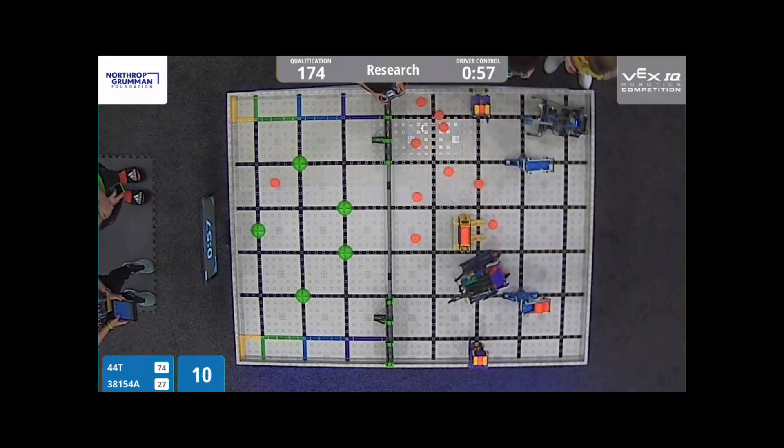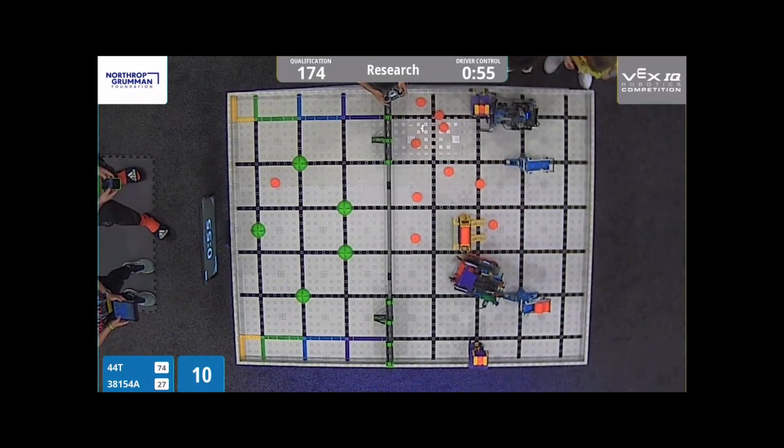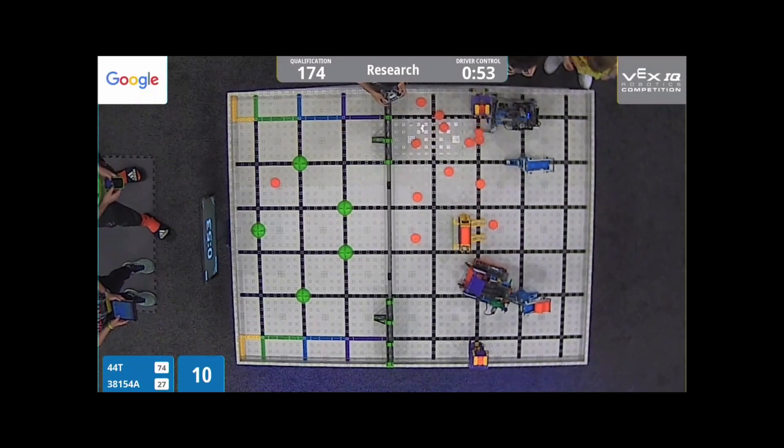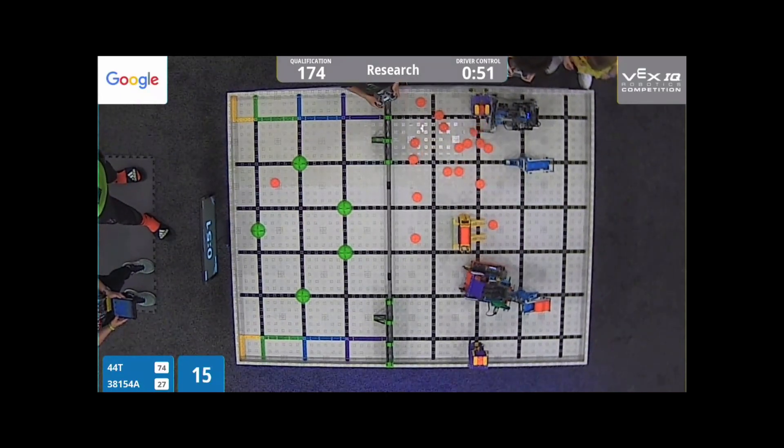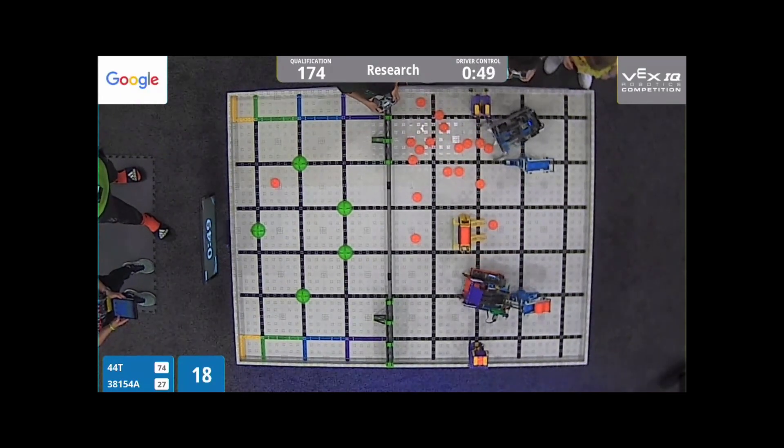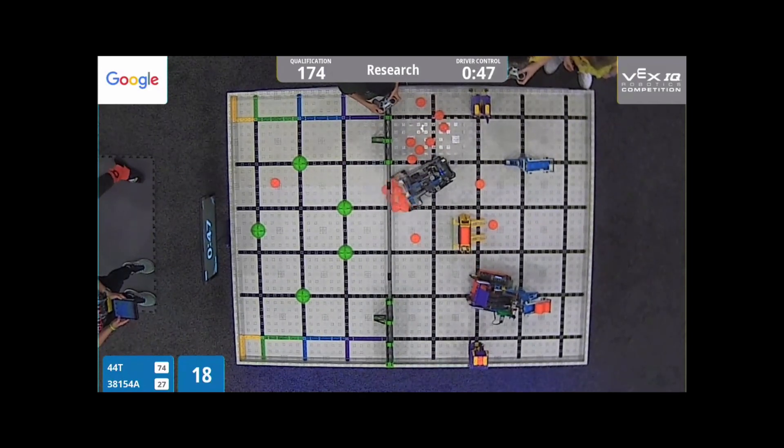Wow, right off the bat picking up that blue dispenser there, interfacing with that purple. I like to see this! So they're actually spinning it from the front of the robot, looks like a little airplane propeller, very cool.